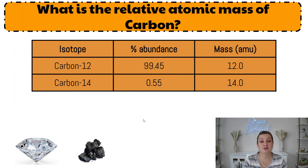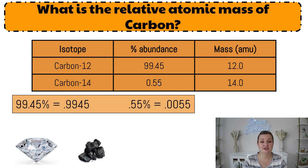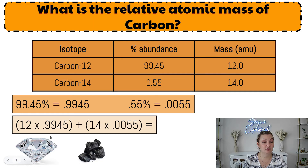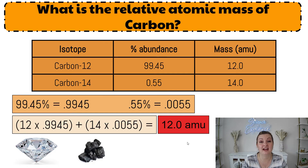What is the relative atomic mass of carbon? This is not a word problem anymore — we have it in a table. Same information, do it the same exact way. We're going to take our percentages and move them two decimal places over, so we get 0.9945 and 0.0055. We're going to multiply these by the masses they belong with and then add them together. So we get 12 times the first number, and 14 times our converted number, then add them together in our calculator, and we get 12 AMU for the mass of carbon.